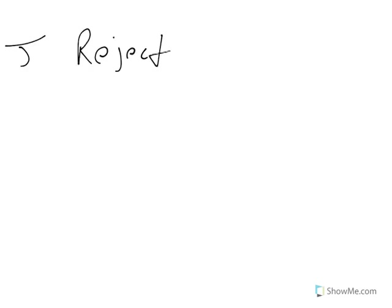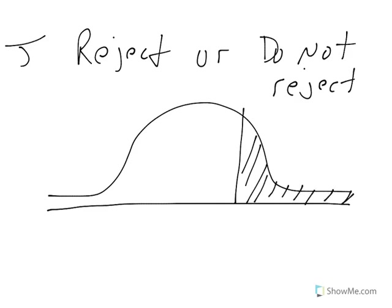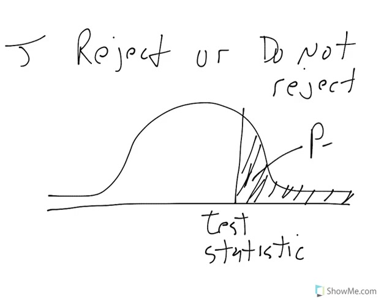Our final step, step five, is if we reject or do not reject. Say our alternative is greater than, so therefore we're up in the tail. We get a test statistic, then we find a probability based off that test statistic and that gives us our p-value. To find p-values you pretty much have to use technology, unless you're going to standardize, normalize it, and then find your Z value to find your p-value.